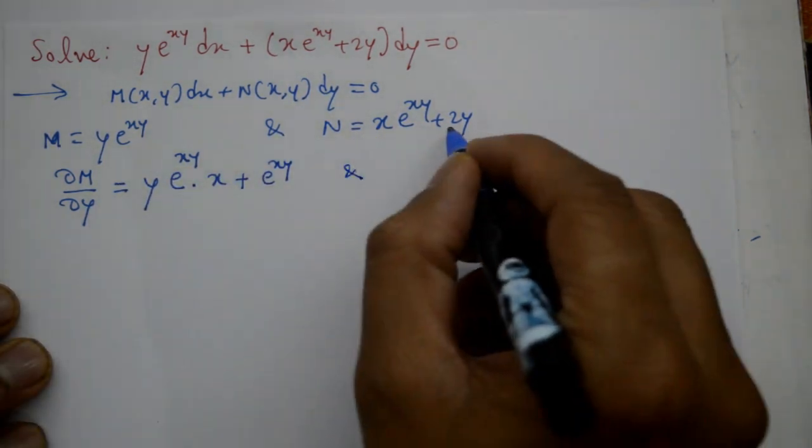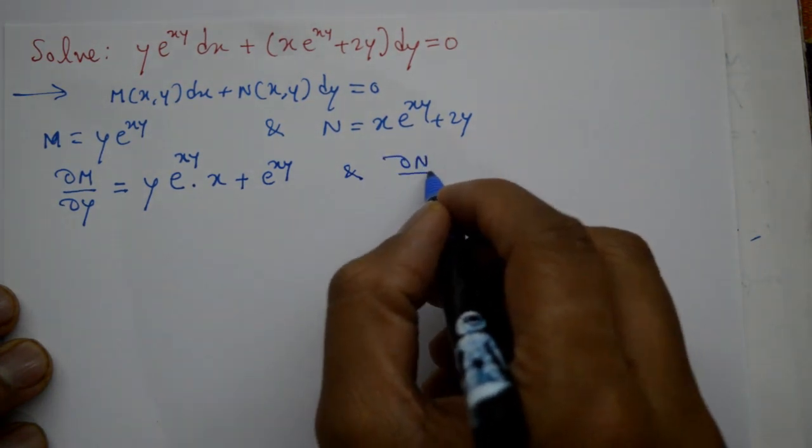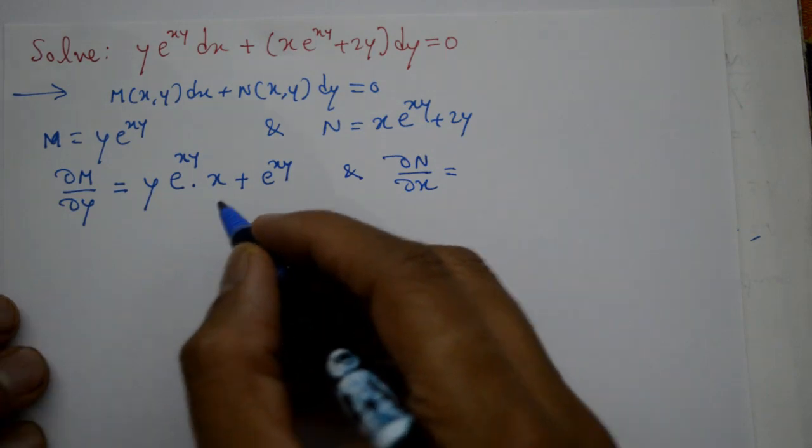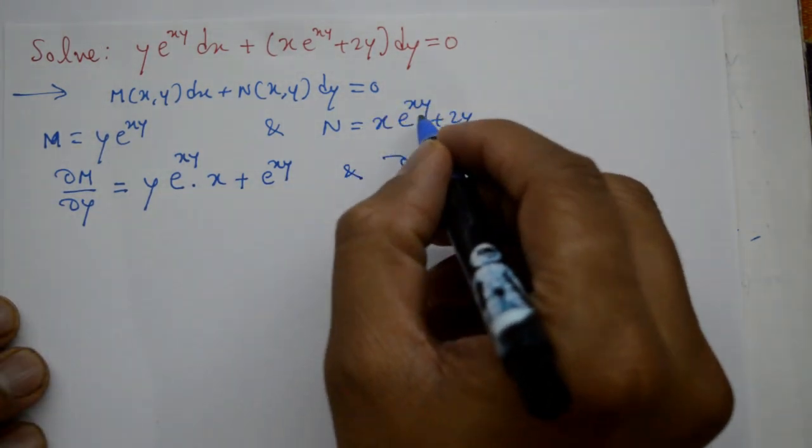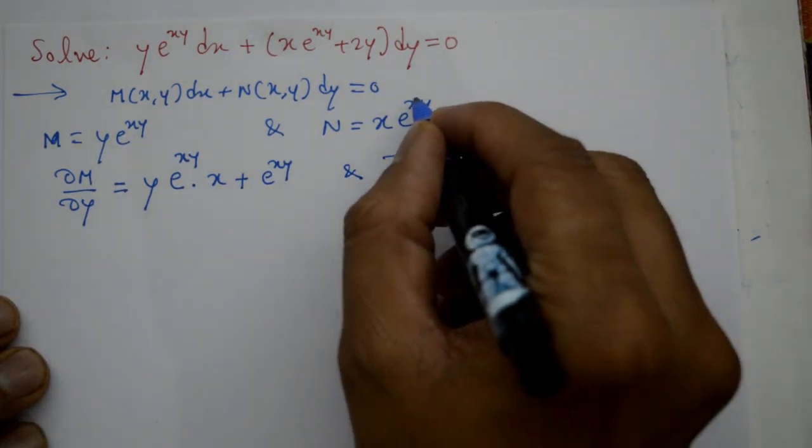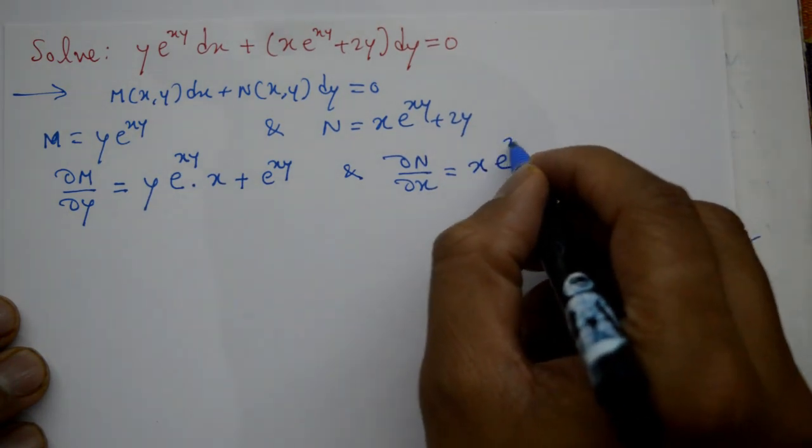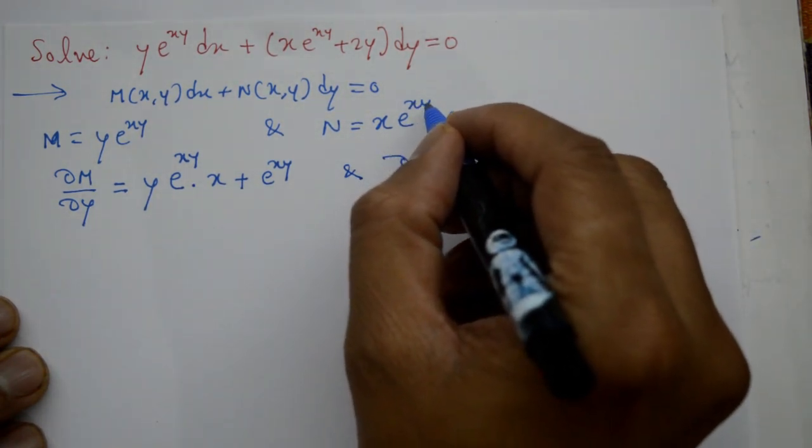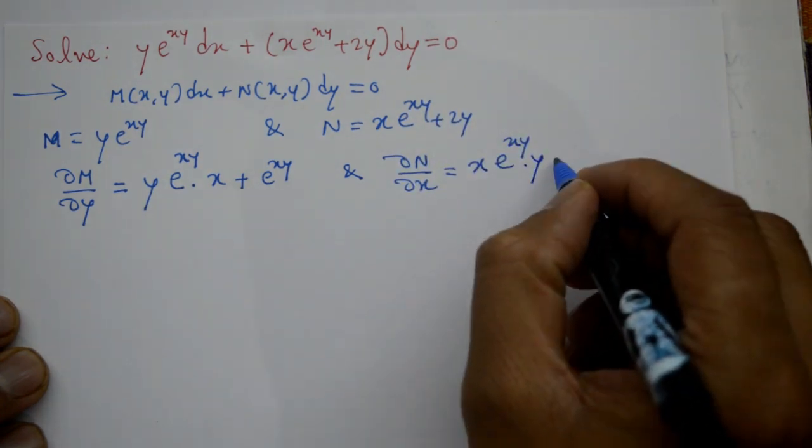Next, we'll take this, differentiate n with respect to x partially, y treated as a constant. First term, use product rule, x as it is, differentiate this one, e raise to xy, again differentiate xy, y treated as a constant, x becomes 1, into y. Plus, e raise to xy, x differentiate with respect to x is one.